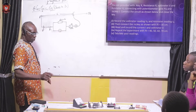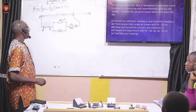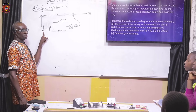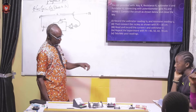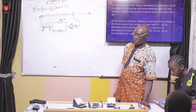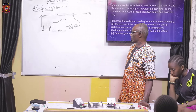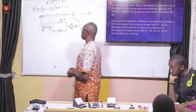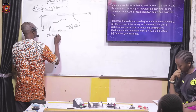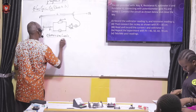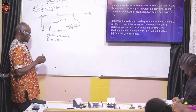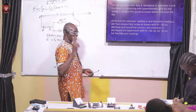So this is the potentiometer, followed by the cell. This is the cell. We are directed to use 1.5 and 1.5, which is 3 volts. So we are using the value of E as 3.00 volts because there are two cells involved.